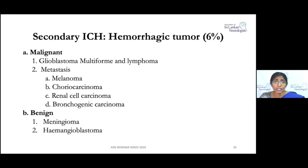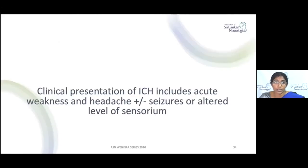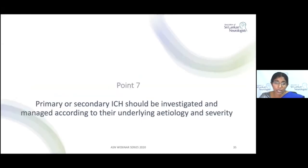Tumor bleeds are another secondary etiology of ICH, divided into malignant and benign. The commonest primary malignant cause is glioblastoma multiforme; lymphoma can also cause ICH. Among metastatic causes, melanoma is the commonest. Among benign tumors, meningioma and hemangioblastoma are common. Clinical presentation of ICH includes acute weakness, headache, presence or absence of seizures, and altered sensorium. Both primary and secondary ICH should be investigated and managed according to underlying etiology and severity.